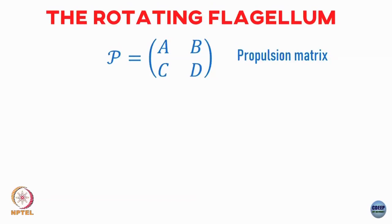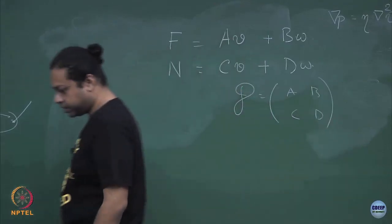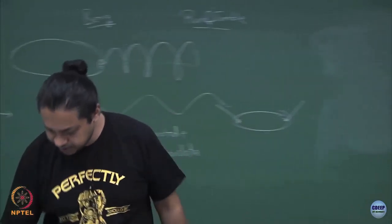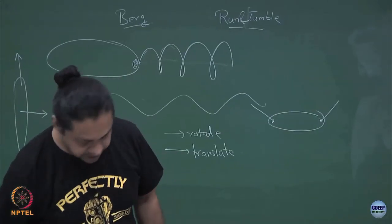What properties would this matrix obey very generally? What a, b, c, and d will be will depend on the body — on the shape and the size of the body, this corkscrew or whatever swimmer you have. But very generally, can I say something about the structure of this propulsion matrix P = [a, b; c, d]?